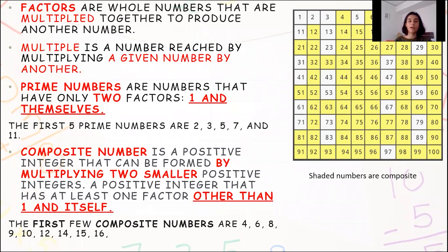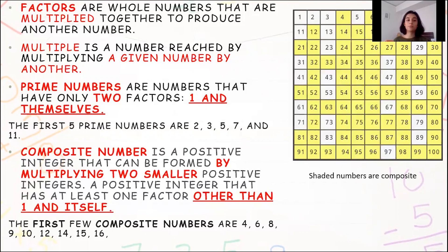So what are factors? Factors are those whole numbers that are multiplied together to produce another number. Like these numbers, when you multiply them, you produce another number. For example, 2 into 4 is 8. So 2 and 4 are factors of 8.